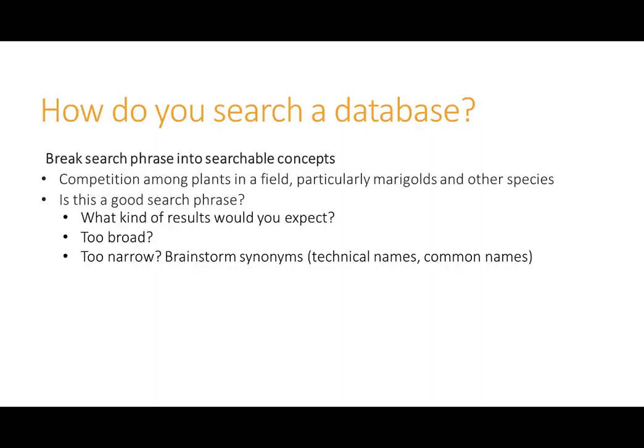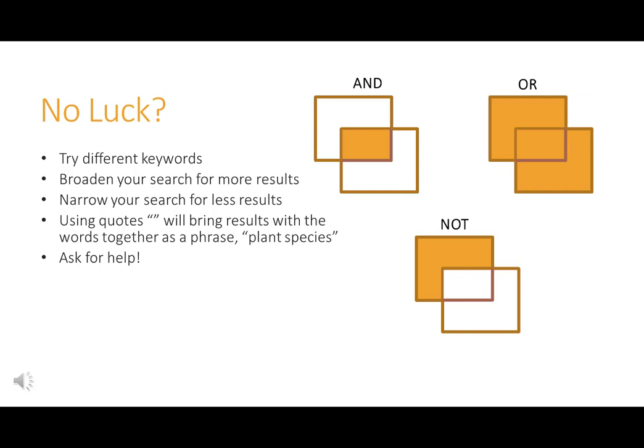When using a database like Scopus, how do you search it? You need to break your search phrase into searchable concepts — this will create keywords. For example, a competition among plants in a field, particularly marigolds and other species, might be your search phrase. Is this a good search phrase? Is it too broad or too narrow? You should brainstorm synonyms of your phrase. Once you break this phrase into concepts, you are ready to search in a database. Still having no luck? Try different keywords. Use the word OR to broaden your search for more results. Use AND to narrow your search for fewer results. Using quotes will bring results with the words together as a phrase, such as "plant species."